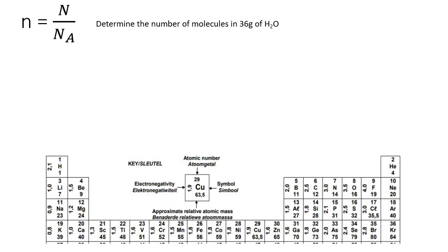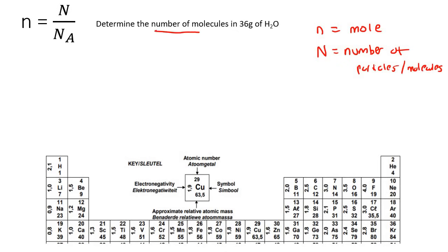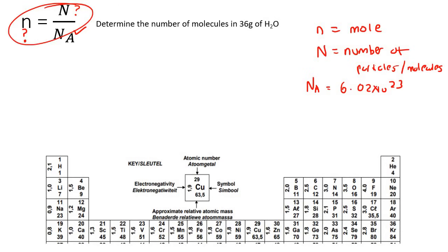Here's a pretty interesting question: determine the number of molecules in 36 grams of H₂O. If we just try to use the N = n × Nₐ formula, we run into problems because N is the unknown, Nₐ is a known constant, but we also don't know the number of moles, small n. So we have two unknowns — that's a problem.